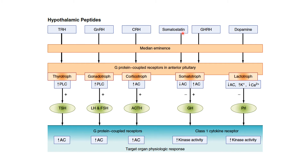Growth hormone releasing hormone also works through G-protein-coupled receptors and increases adenylyl cyclase activity, activating the cyclic AMP second messenger system. Once growth hormone goes to its target tissues, it works through tyrosine kinase activity. Somatostatin works through G-protein-coupled receptors but deactivates or inhibits adenylyl cyclase activity, thus does not increase the cyclic AMP second messenger system — that is how it is inhibitory.